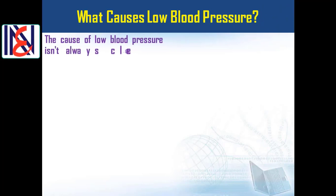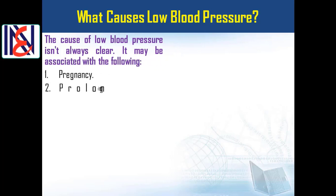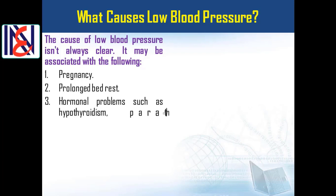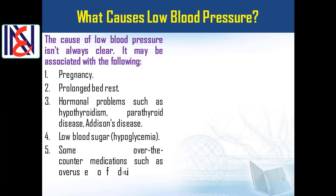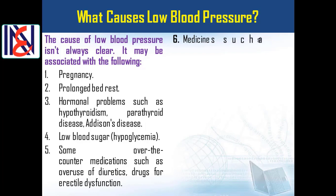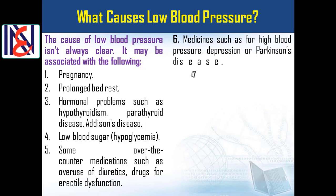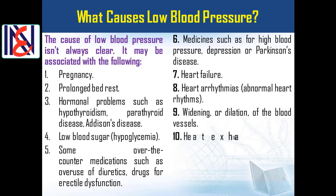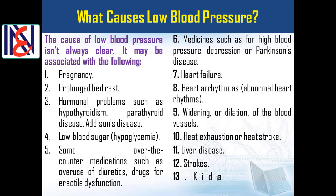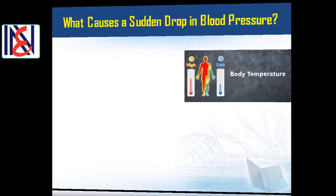What causes low blood pressure? The cause of low blood pressure isn't always clear. It may be associated with the following: 1) pregnancy, 2) prolonged bed rest, 3) hormonal problems such as hypothyroidism, parathyroid disease, or Addison's disease, 4) low blood sugar (hypoglycemia), 5) some over-the-counter medications such as overuse of diuretics or drugs for erectile dysfunction, 6) medicines for high blood pressure, depression, or Parkinson's disease, 7) heart failure, 8) heart arrhythmias (abnormal heart rhythms), 9) widening or dilation of the blood vessels, 10) heat exhaustion or heat stroke, 11) liver disease, 12) strokes, 13) kidney failure.